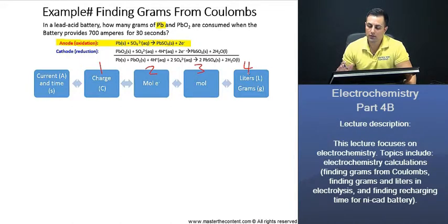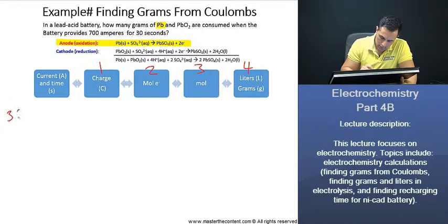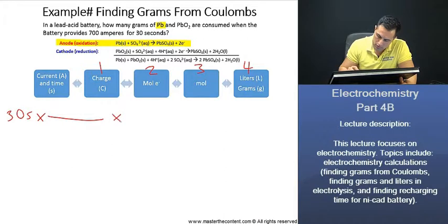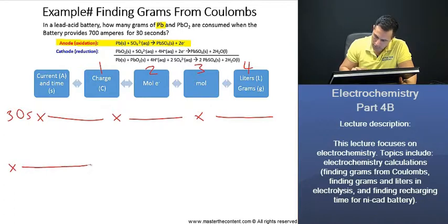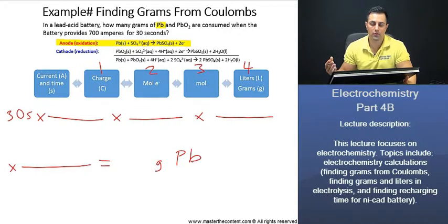And we don't even need to write down the numbers. We can just go ahead and write down our conversions initially. And that's going to be one conversion, two conversions, three conversions. And we'll do this one here just so we don't get crowded. And that's going to give us our grams of lead. We're already set up. Perfect.